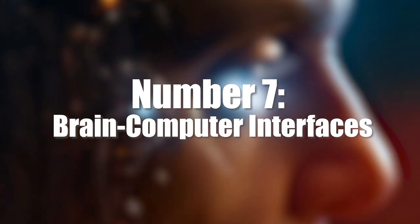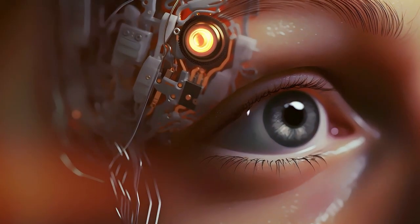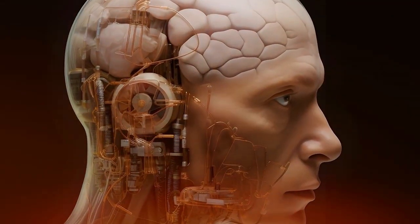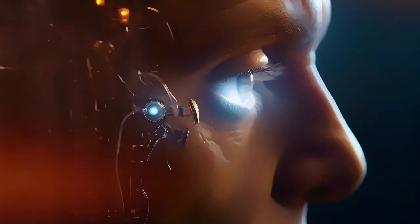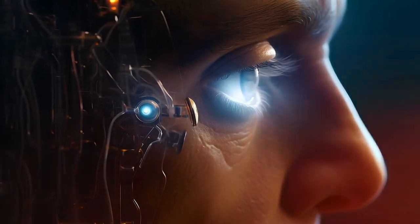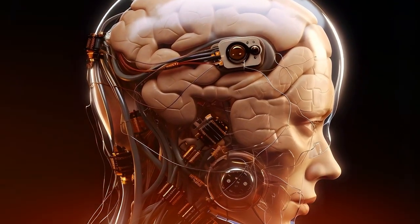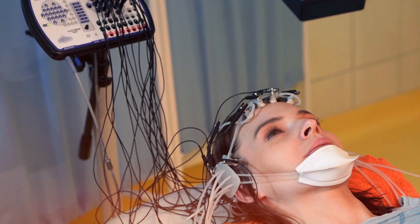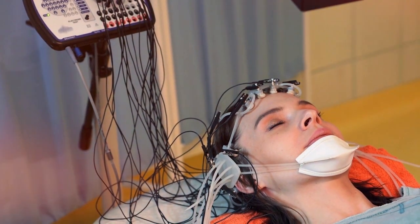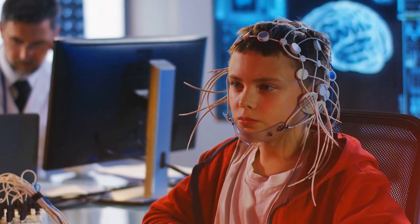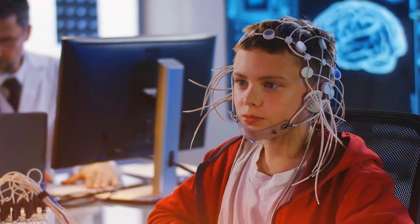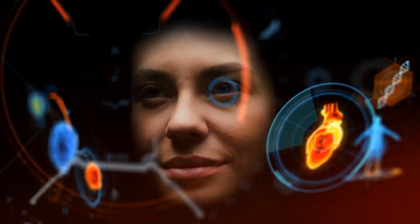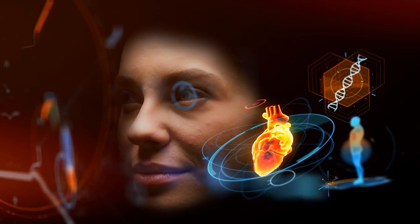Number 7, brain computer interfaces. Imagine controlling computers, phones, or robots with just your thoughts. Brain computer interfaces are set to revolutionize how we interact with technology. These devices use tiny sensors to read brain signals and turn them into machine commands. For people with disabilities, this could be life-changing, allowing them to control robotic limbs with their thoughts. But it gets wilder. In the future, we might download information directly into our brains, learning languages or skills in minutes. We could even share thoughts and feelings directly with others, like telepathy.